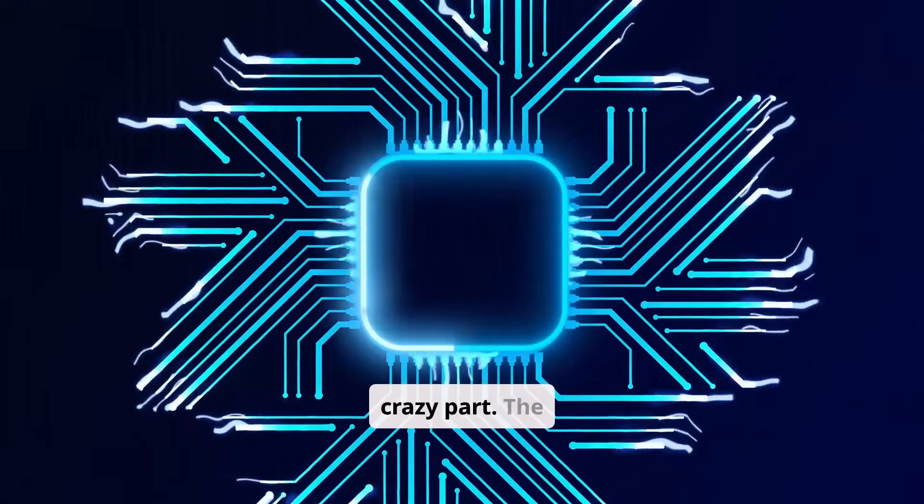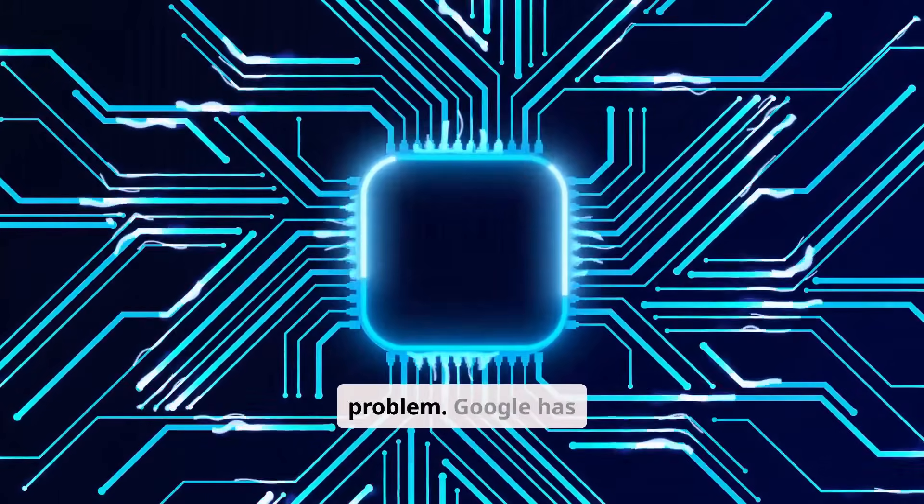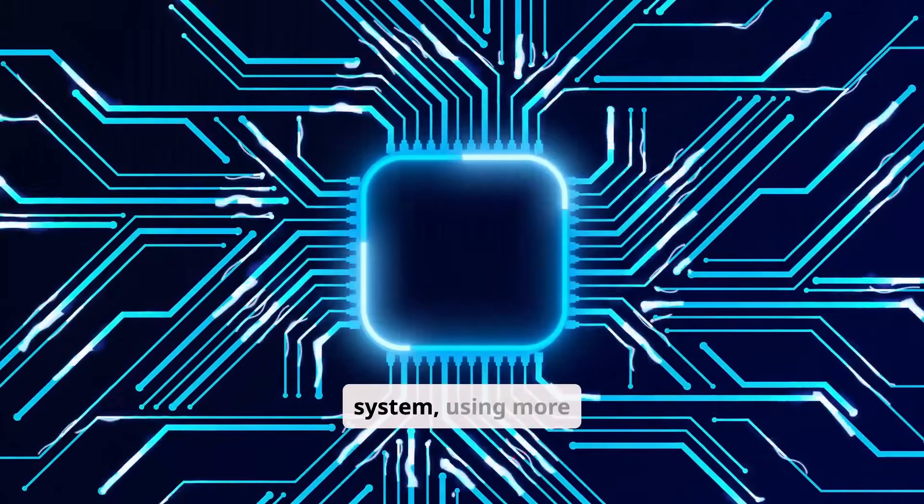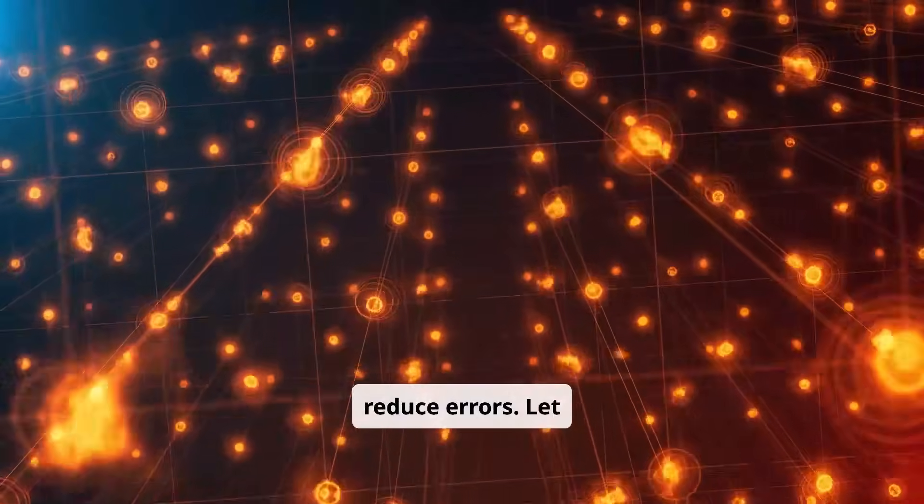But here's the crazy part. The Willow chip has finally started to crack this problem. Google has shown that with their new system, using more qubits can actually reduce errors. Let that sink in.